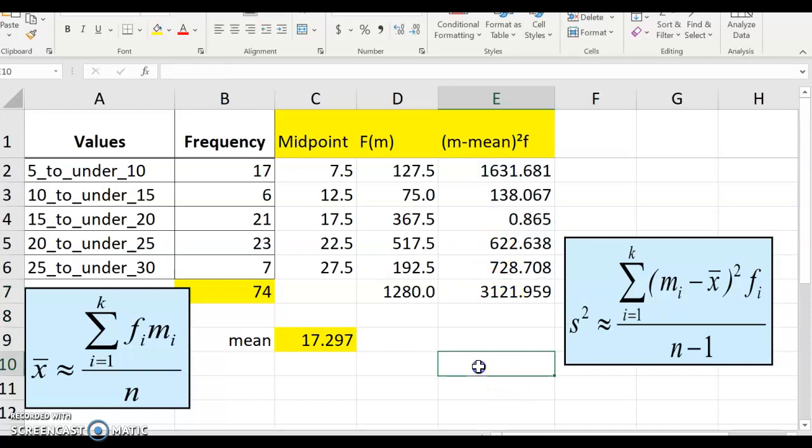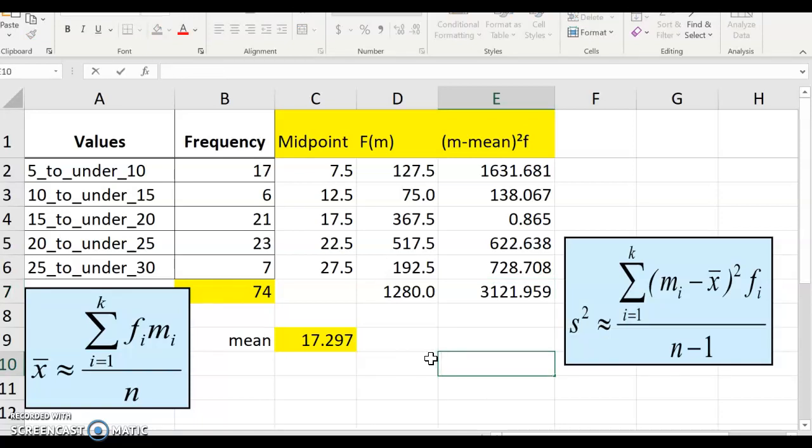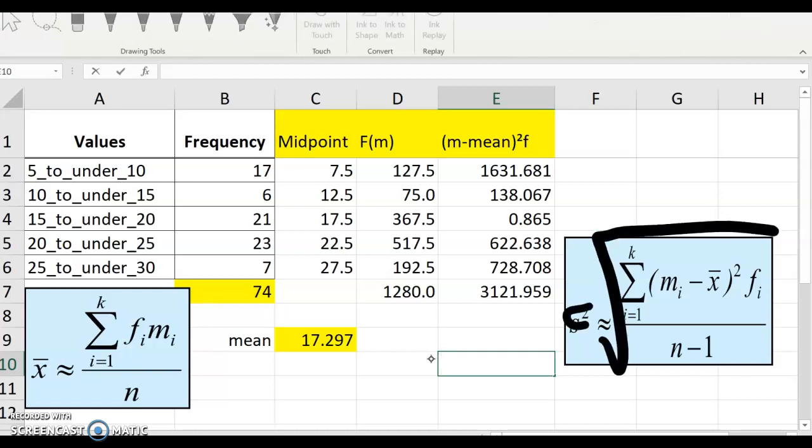And so what we need to do is take – because this is technically the variance formula, so we have to take the square root just to get s. So we're going to take equals square root, and we're going to do the mean divide – I mean the numerator, which is 3121.959,